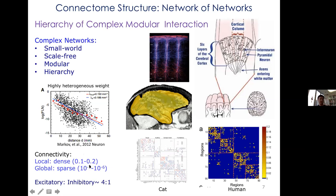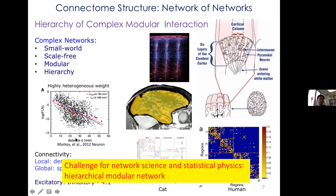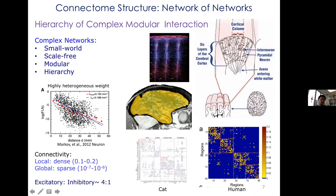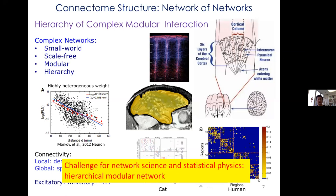If you imagine a random network, globally it is very sparse but locally very dense. Connectivity decays with distance. There are two types of neurons: excitatory neurons that activate others, and inhibitory neurons that prevent activation of others. This hierarchical modular architecture is challenging for both neuroscience and statistical physics, as every level has a kind of finite-size system.